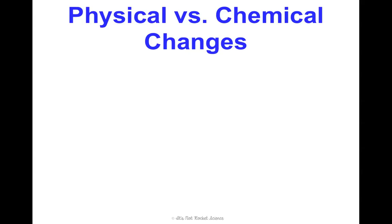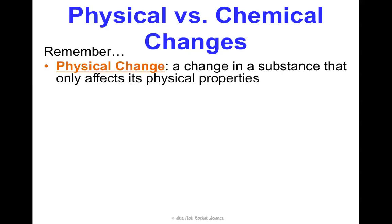I want you to remember physical and chemical changes and the difference between them. A physical change is a change in a substance that's only affecting its physical properties. For example, if I take a piece of paper and I cut it, or color it, or crush it into a ball, or if I take an ice cube and I melt it or boil it, I'm not changing the identity of the substance. I'm just changing some physical things about it.